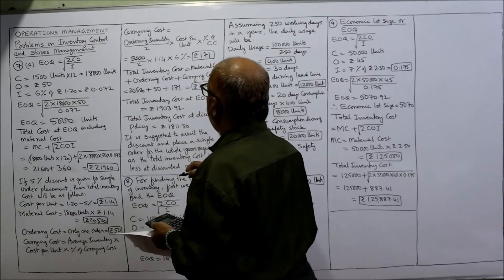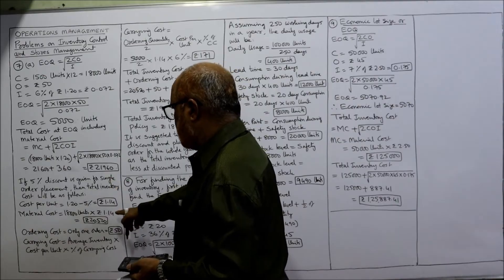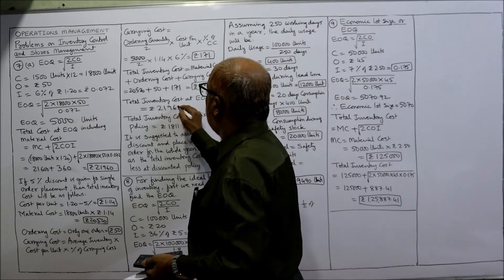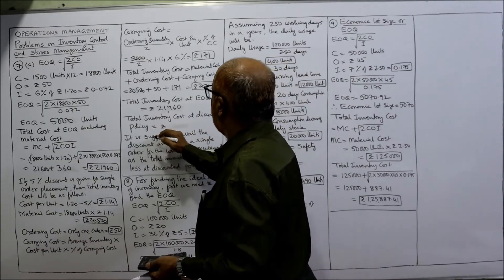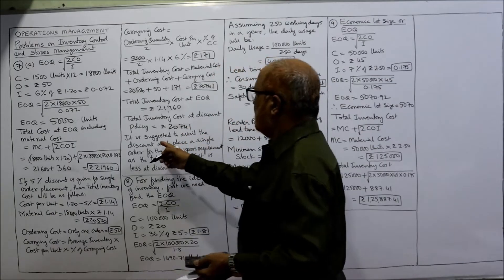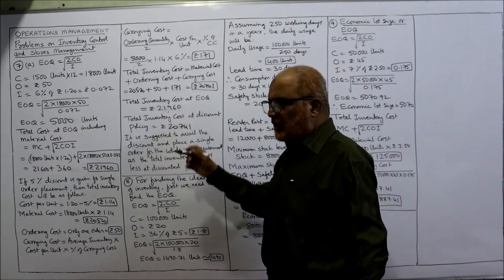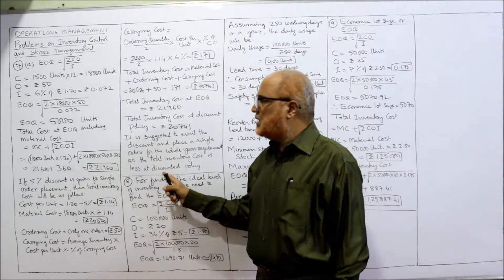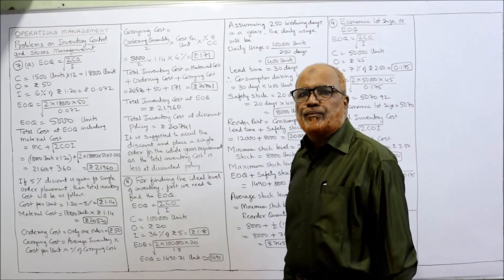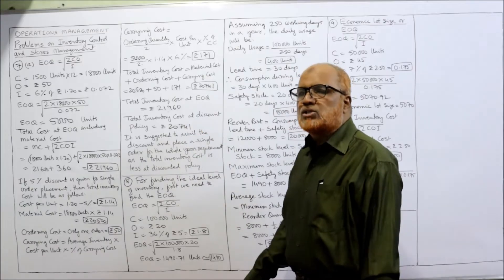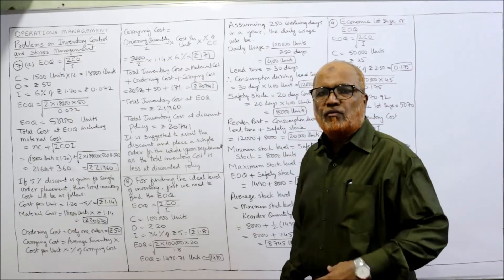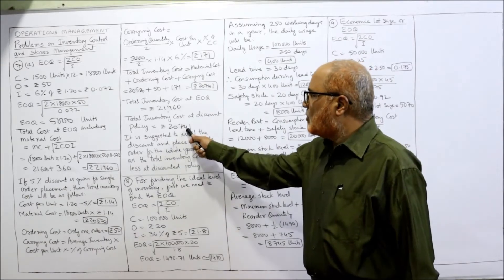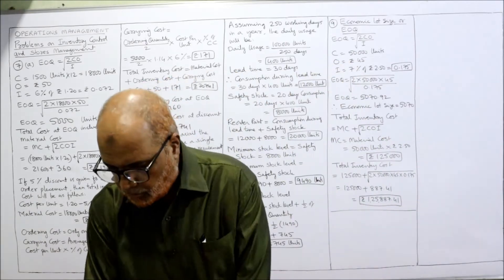Comparing: total inventory cost at EOQ is 21,960, whereas total inventory cost under the discounted policy is 20,741. Since the cost is lower under the discounted policy, we suggest the company avail the 5% discount and place only one order, as the total inventory cost is less.